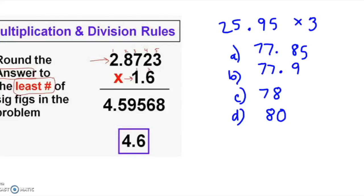In this video, I'm going over the rules for calculating using significant figures. The first set of rules pertains to multiplication and division, and it's real simple. You just round the answer to the least number of sig figs in the problem — round your quotient or product to the measurement that has the least number of significant figures.